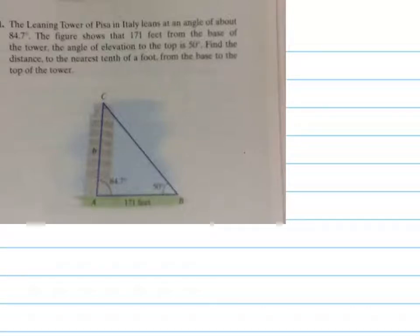Now here's a leaning tower of Pisa word problem and we're trying to find B right here. Notice that we have 50 degrees which is across from B so I'm going to set up a law of sines.